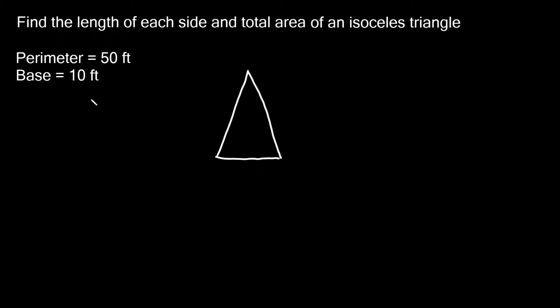It gives us some information. It says the base is equal to 10 feet, so we know that the third side, the different side right here would be 10 feet. What else do we know? Well, we also know the perimeter. It says it's 50 feet.